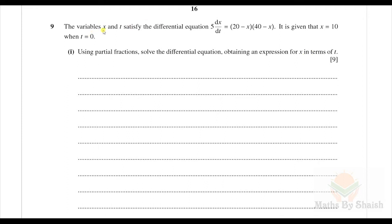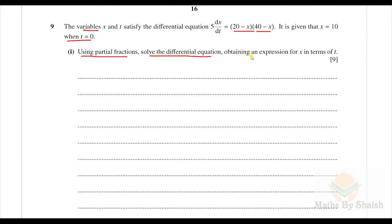The variables x and t satisfy the differential equation 5 dx/dt = (20 − x)(40 − x). It is given that x = 10 when t = 0. Using partial fractions, solve the differential equation and obtain an expression for x in terms of t.